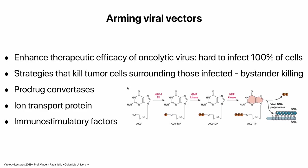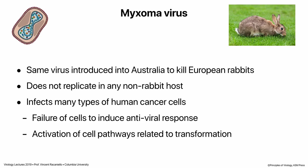We can also put various genes into these vectors. One approach uses prodrug convertases: since it's hard to infect 100% of cells in a tumor even by direct injection, why not make something that diffuses throughout and kills the rest? The herpes simplex thymidine kinase gene, not present in normal cells, can be put into an oncolytic virus vector. The tumor cells producing TK then activate a prodrug — making it specific for tumor cells. We can also put ion transport protein genes and immunostimulatory factors into these vectors.